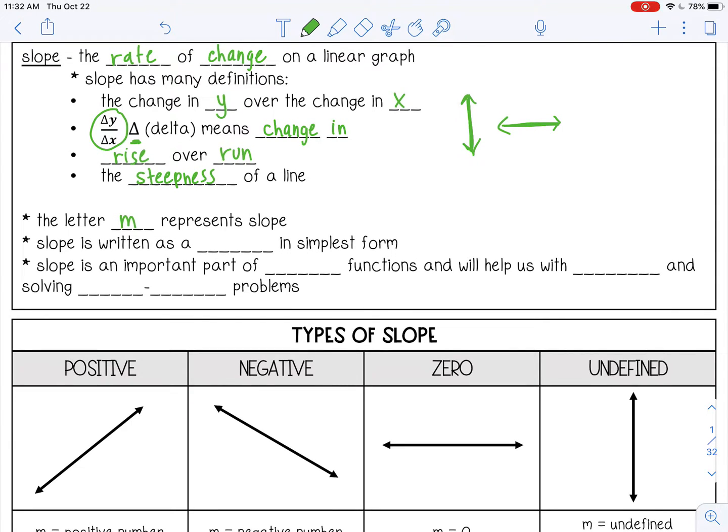The letter m is used to represent slope. So if you see m equals a number, that is your slope.